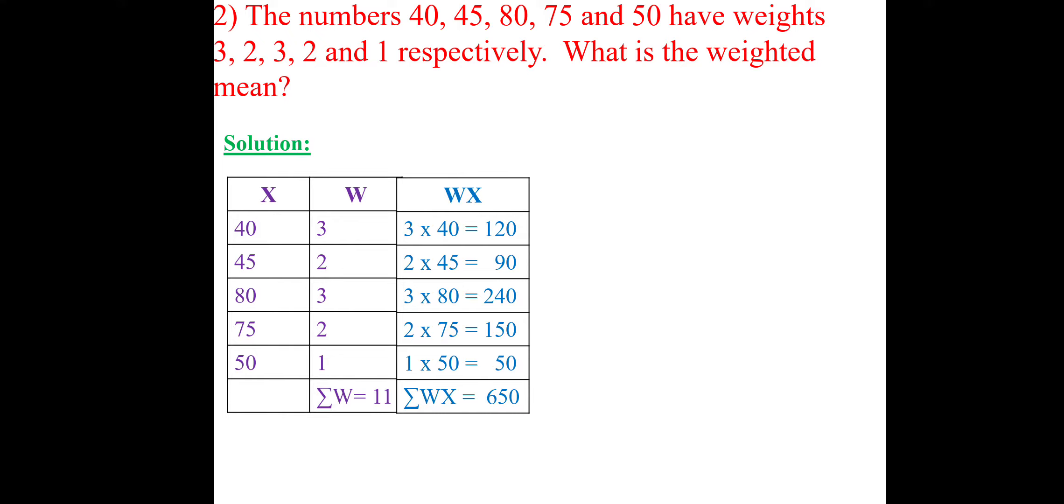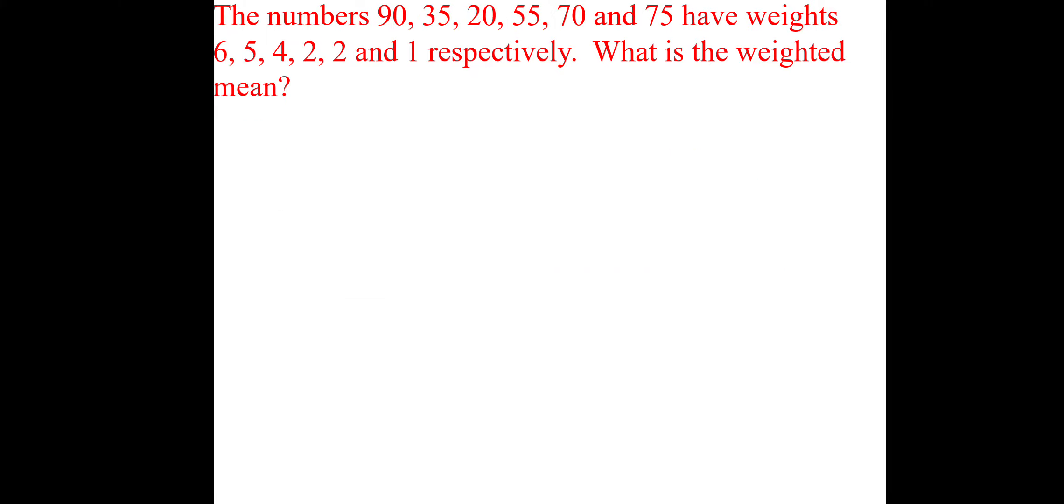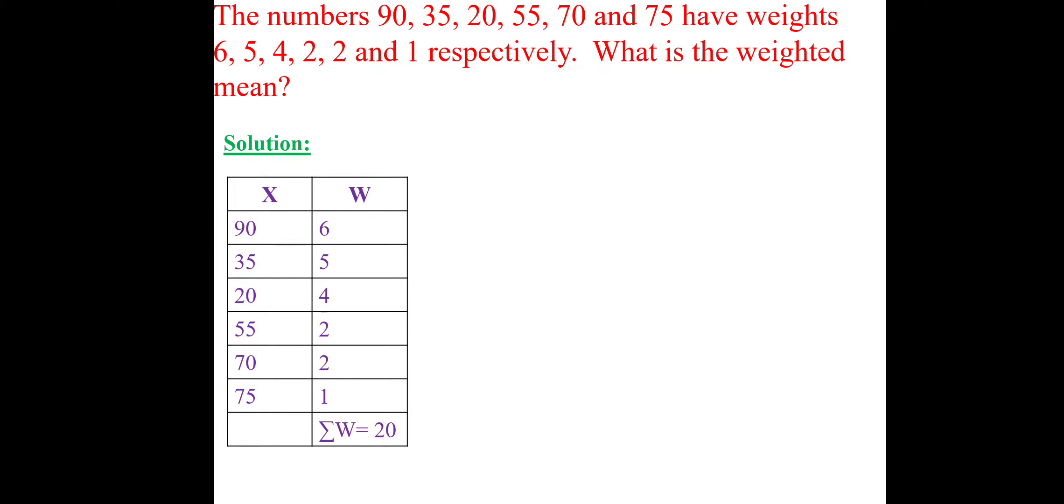So, summation WX equal to 650. So, formula we know summation WX divided by summation W: 650 divided by 11 because 11 is the value, 59.09. This is the way weighted mean we can solve it. Another example will be taken. And the given values numbers will be written as 90, 35, 20, 55, 70, 75 as X.